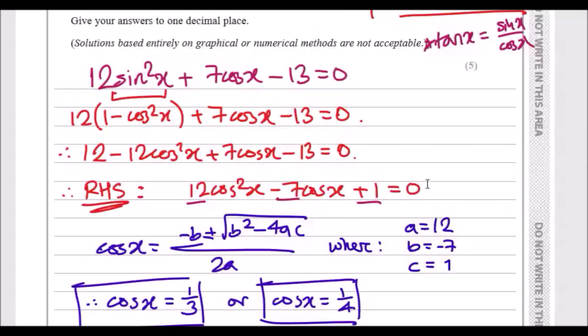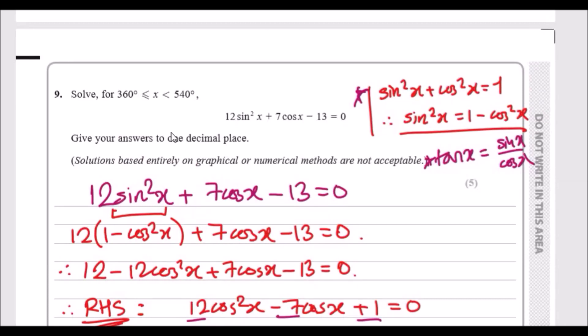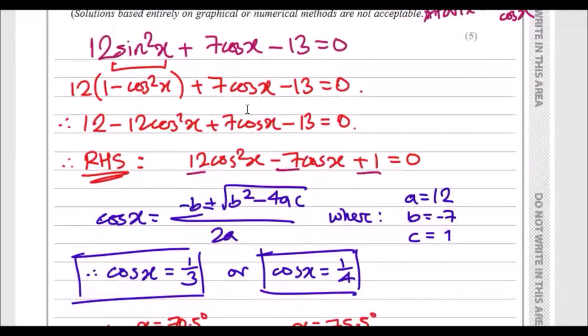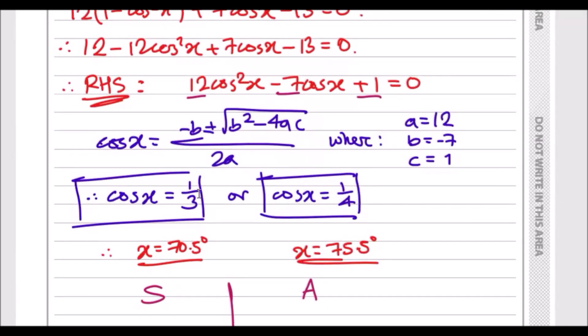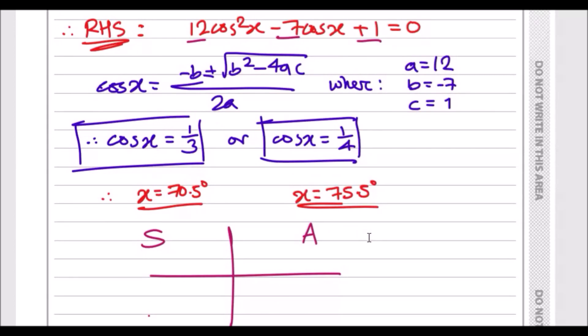Make sure your calculator is in degree mode, not radians, because we want the actual degree angles. When you do cos inverse a third you should get 70.5 degrees, and if you cos inverse a quarter you should get 75.5.